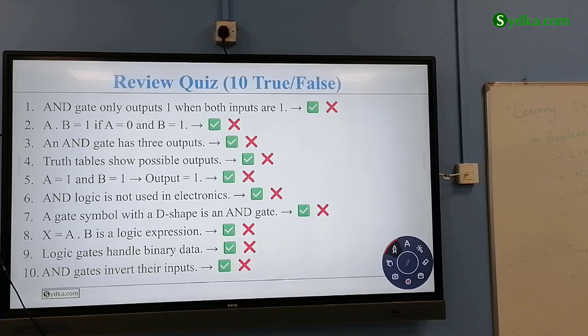If A is equal to one, B is equal to one, output is one? True. AND logic gate is not used in electronics? False, it is. AND gate symbol with a D shape is an AND gate? Yes. X is equal to A dot B is a logic expression? Good. Logic gates handle binary data? Good. AND gates invert the input? Which gate is that? NOT gate with inverter. Good.